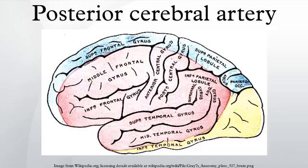The choroidal branches include medial posterior choroidal branches, which run forward beneath the splenium of the corpus callosum and supply the tela choroidea of the third ventricle and the choroid plexus. The lateral posterior choroidal branches are small branches to the cerebral peduncle, fornix, thalamus, caudate nucleus, and choroid plexus of the lateral ventricle.